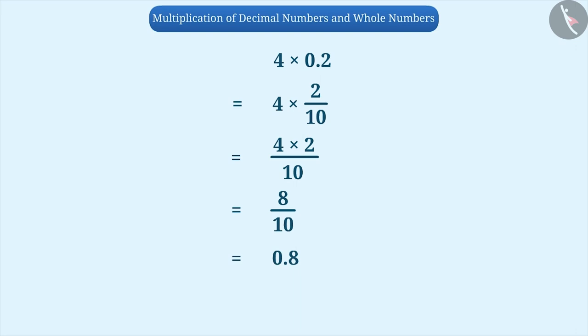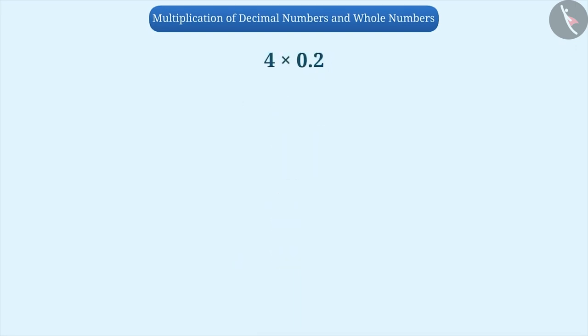There is one more interesting method to multiply decimals. In this method, we write the numbers to be multiplied one below the other. Then we ignore the decimal point and multiply them the same way we multiply whole numbers. After finding the answer, we count the number of digits after the decimal point in the given numbers. Since 4 is a whole number, there are no digits after the decimal point. In 0.2, there is one digit after the decimal point, so there is only one digit after the decimal point in total. In the result, we place the decimal point by counting one digit from the right side.